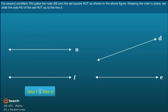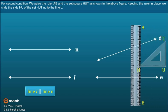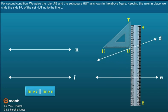For the second condition, we place the ruler AB and the set square HUD as shown in the above figure. Keeping the ruler in place, we slide the side HU of the set square HUD up to line D.